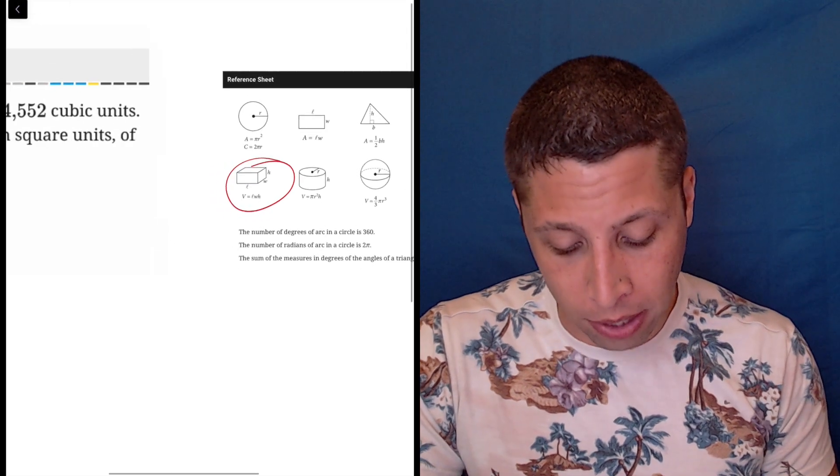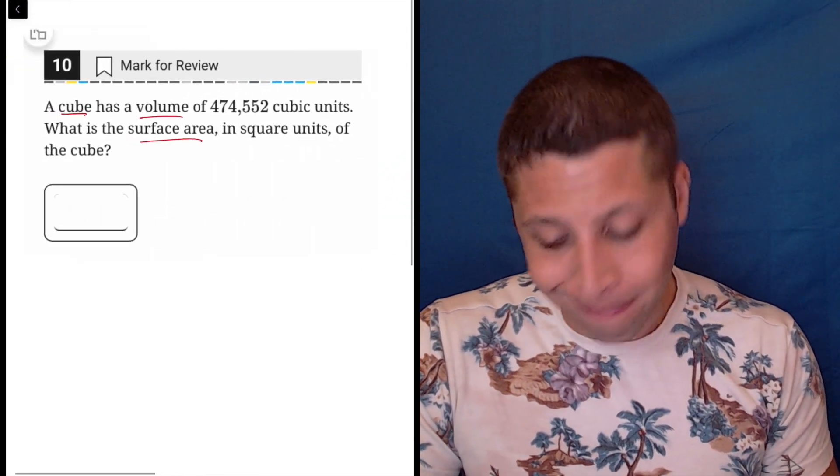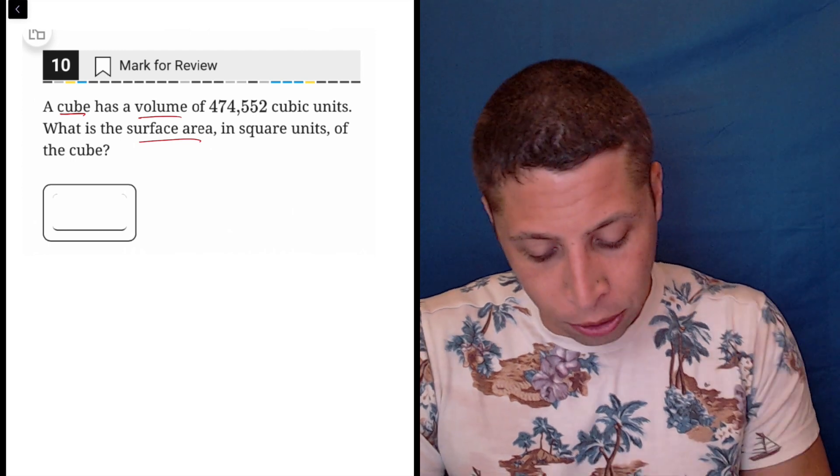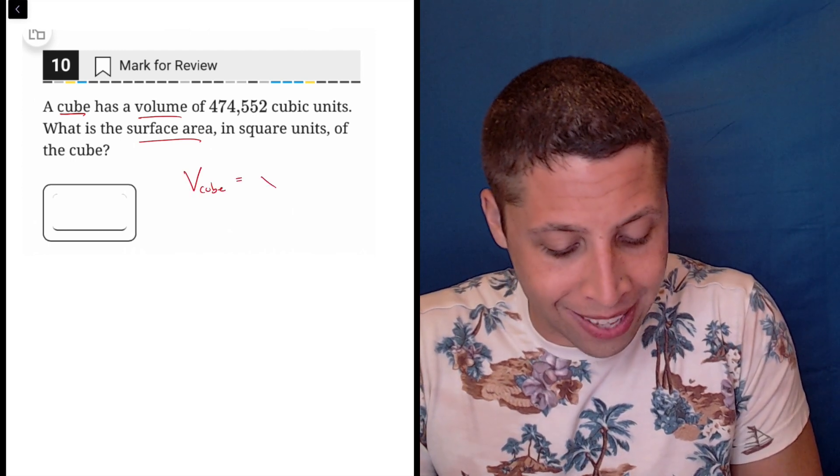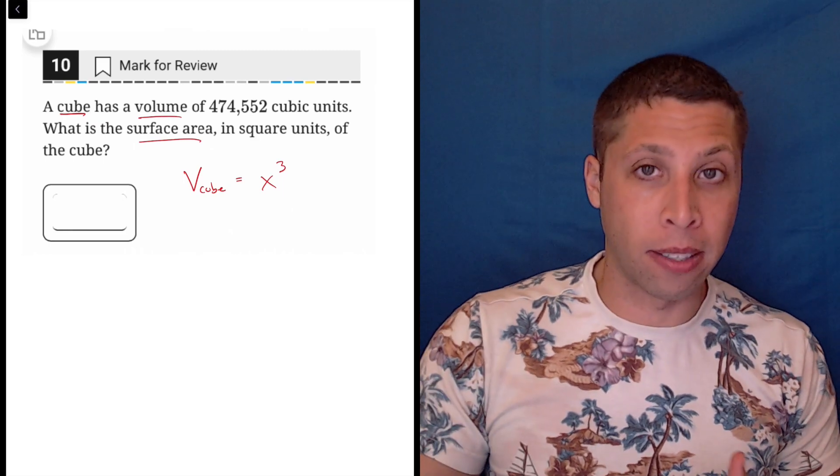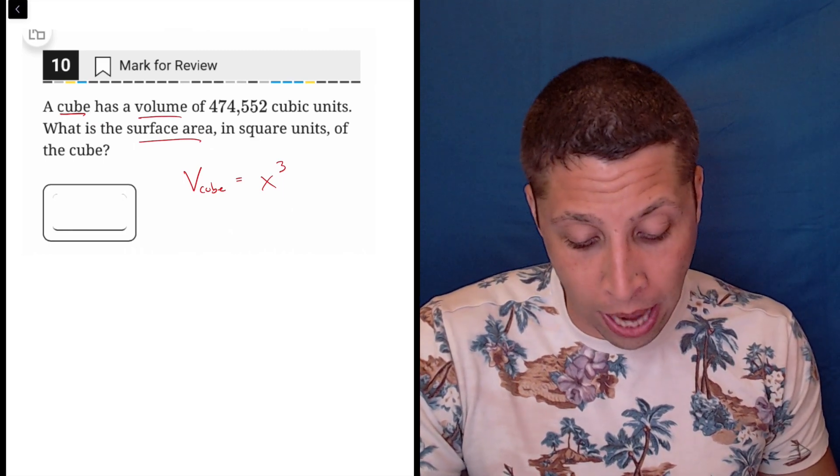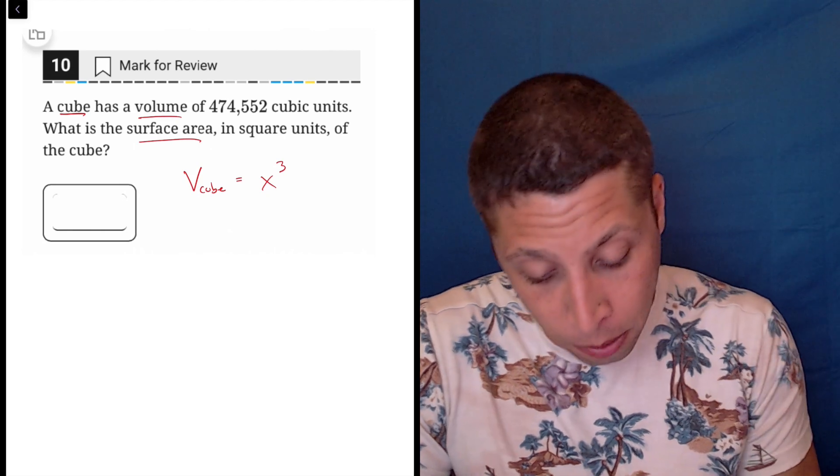You've got to just memorize these formulas. They're very similar, but it's better to memorize them or at least get some practice with them before you take the real test. So the volume of a cube I would just say is x cubed, right, x being the side length. So in this case we can solve for that because we have one of the two components. We have the volume.